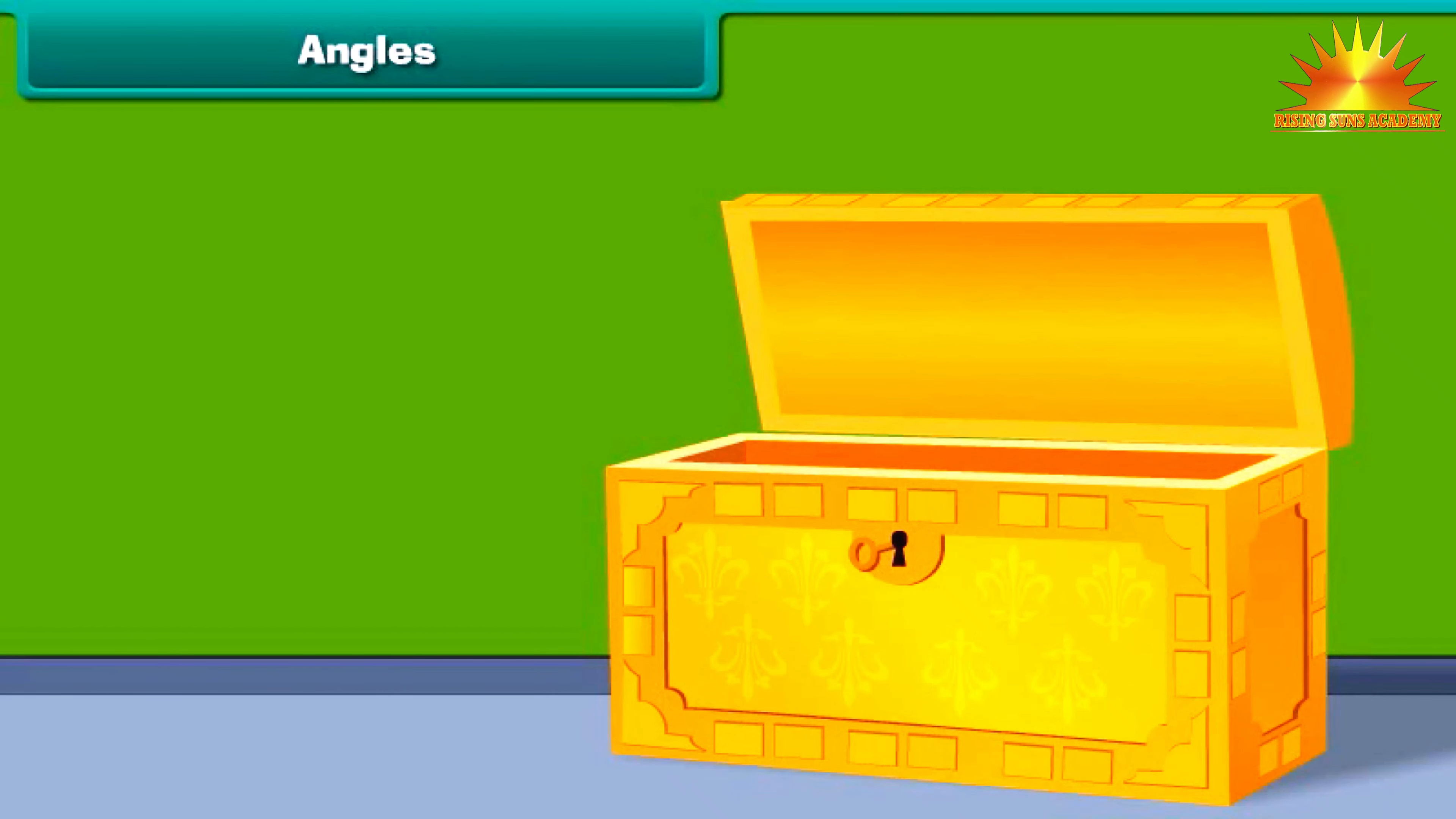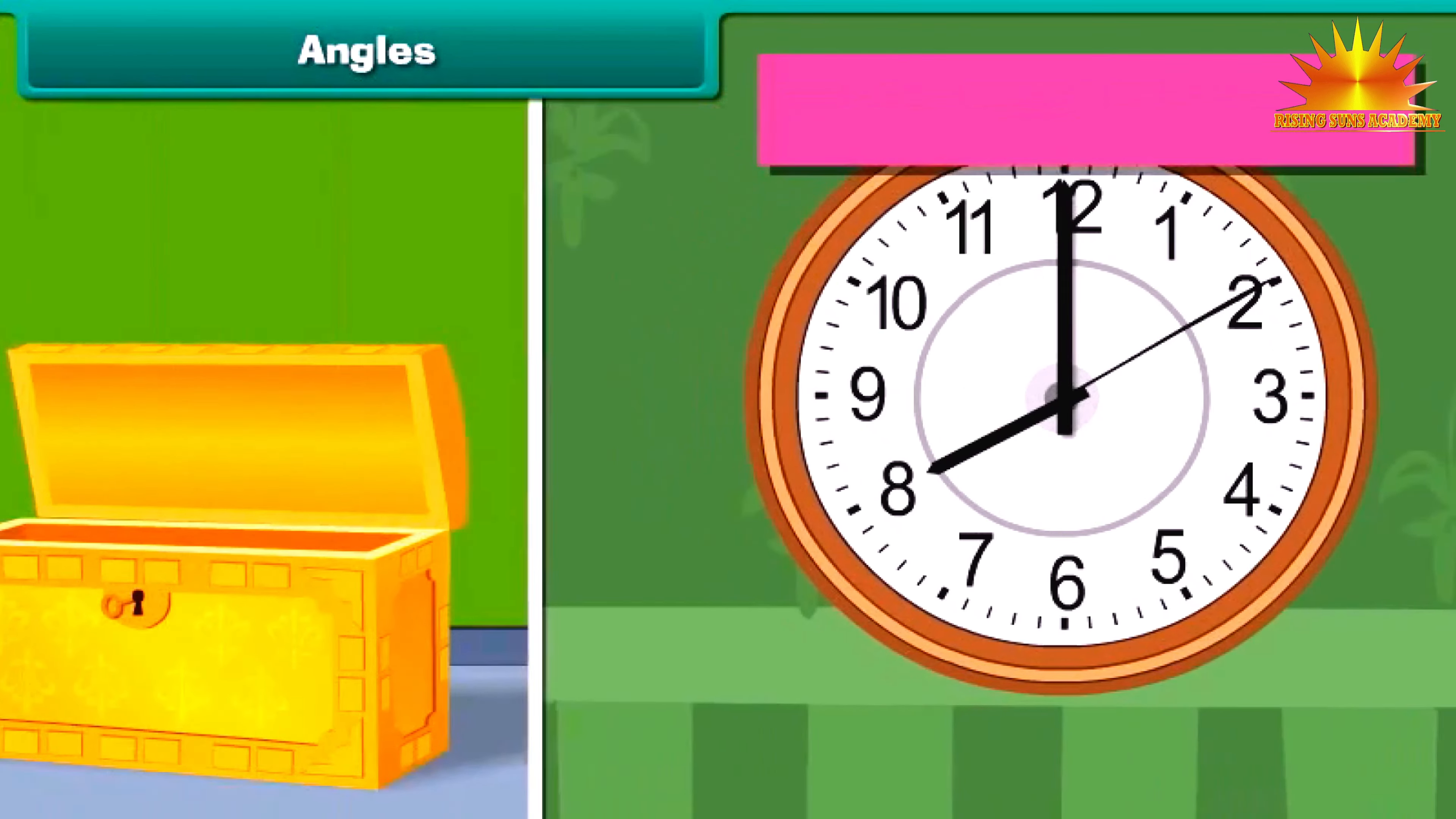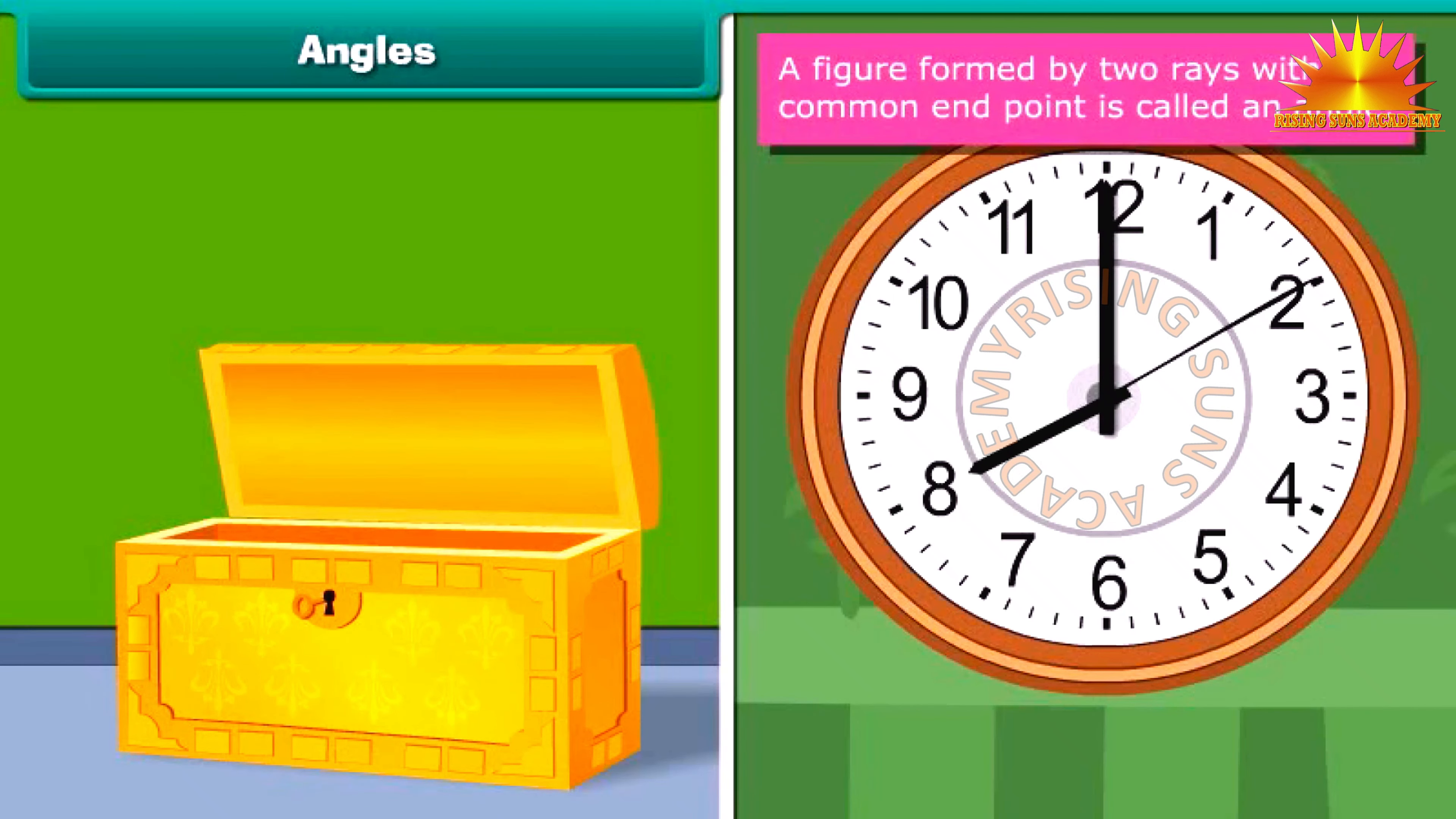Look at this box. What figure it makes? It forms an angle. Similarly, the minute hand and the hour hand in the clock form angles. A figure formed by two rays with a common end point is called an angle. An angle is represented by the given symbol. This is angle ABC. Here B is a vertex, A is a point on one ray while C is a point on another ray.